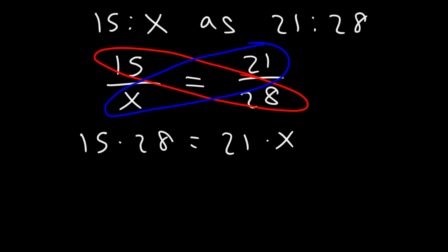Now, using a calculator, you could do 15 times 28 divided by 21, and you'll get the answer. But let's see if we can do this mentally. If you don't want to use a calculator, I recommend rewriting 15 as 5 times 3. Break it down into smaller numbers. 28, you can write that as 7 times 4. 21 is 7 times 3.